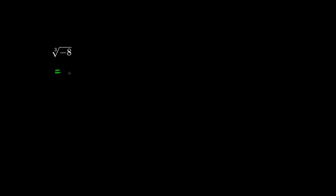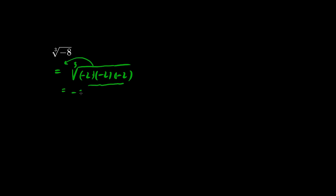What's the cube root of negative 8? What times what times what becomes negative 8? The answer is negative 2. Negative 2, negative 2, negative 2 is the prime factorization — three friends work together and only one negative 2 survives.